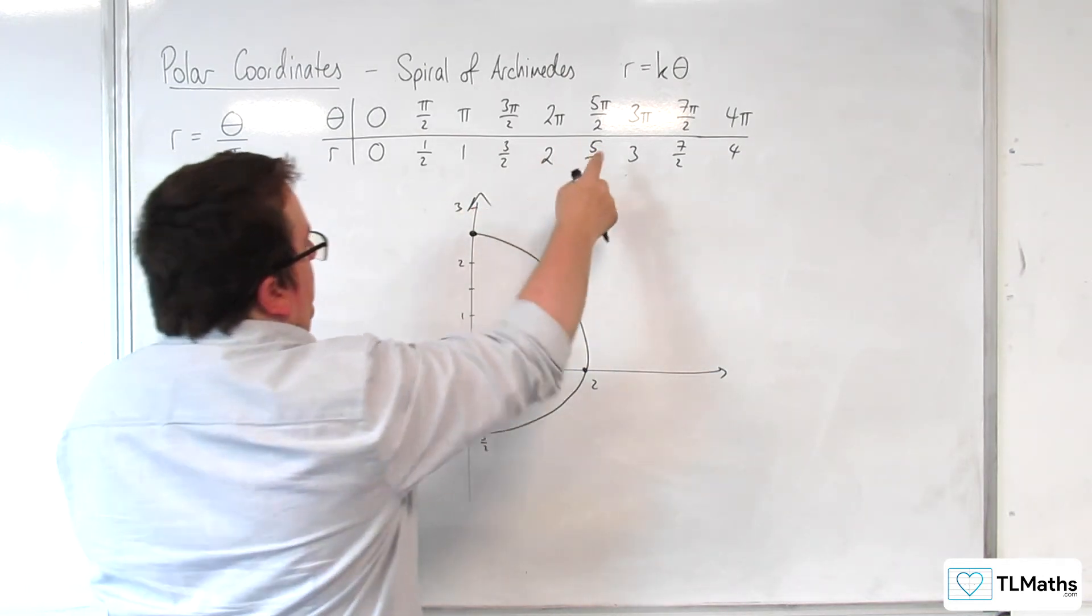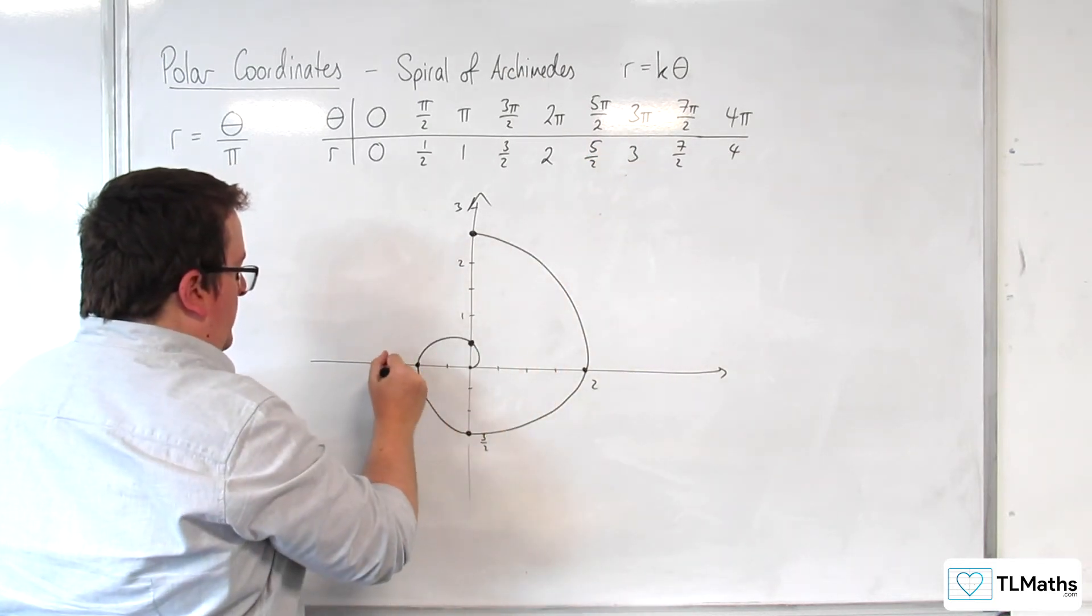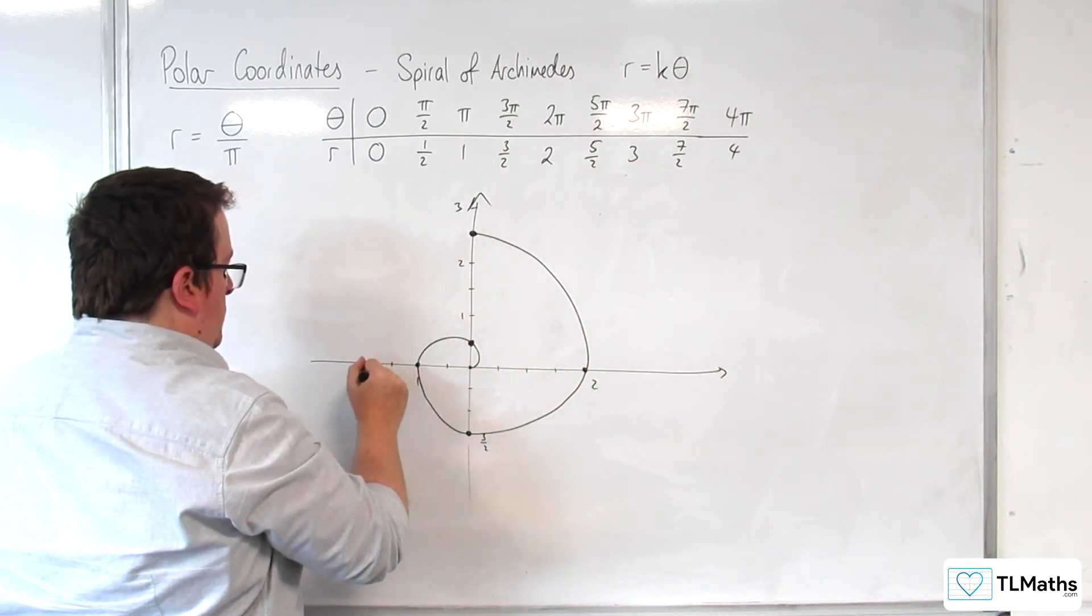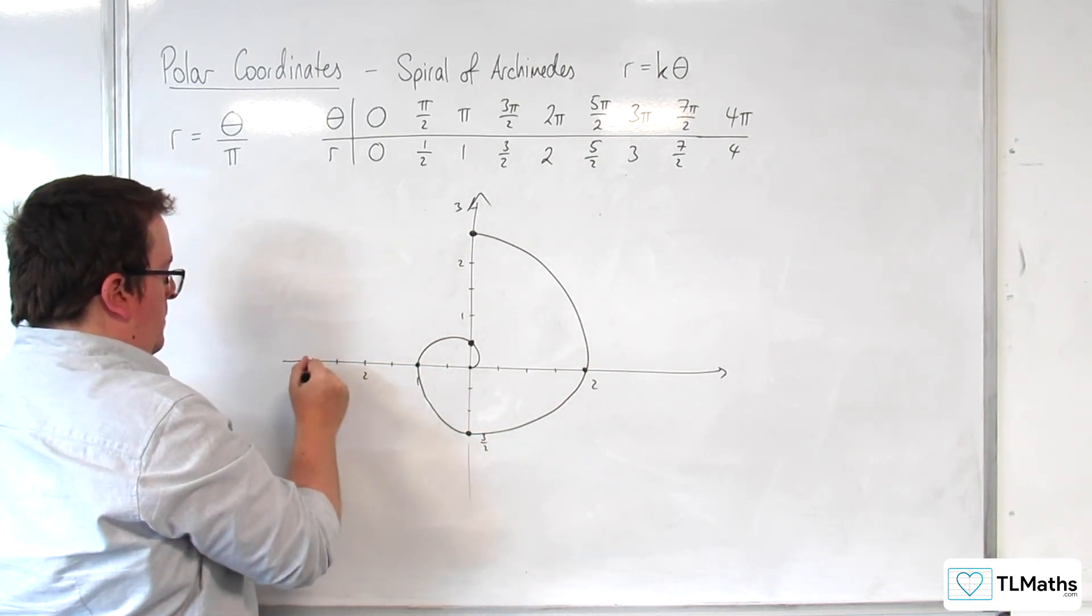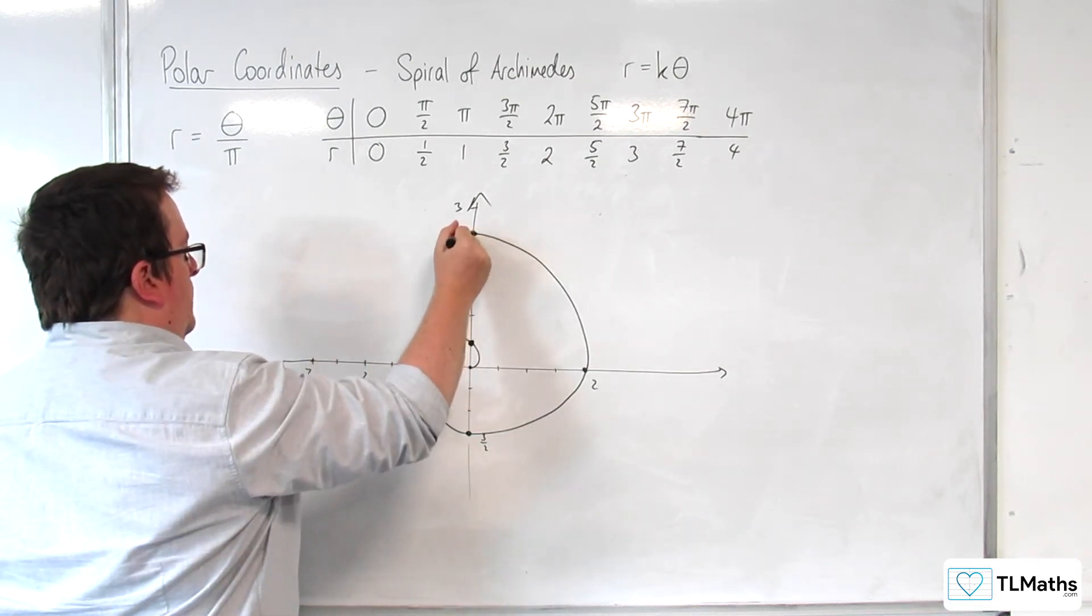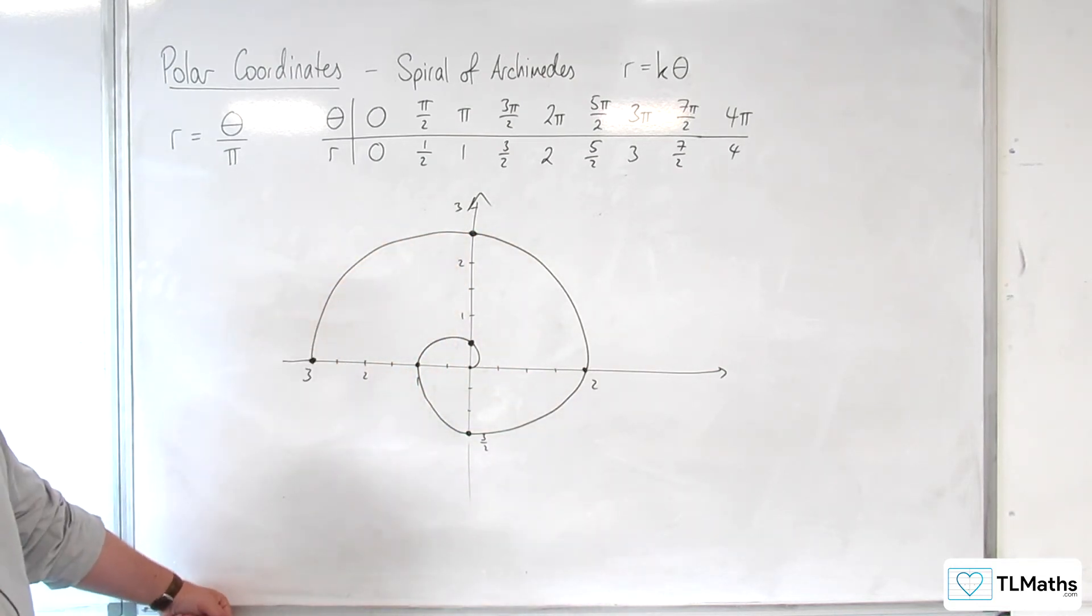Then at theta is 3 pi. Sorry, theta is at 3 pi, r is 3. So, 2, 3.